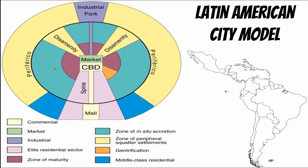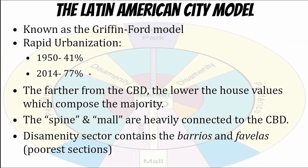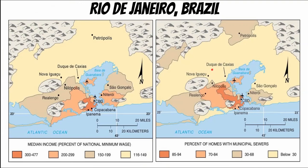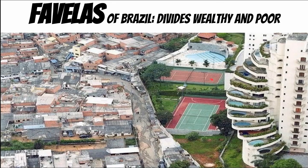Most Latin American cities use the Griffin-Ford model. They have a spine — a promenade where people walk with malls and high rent — followed by disamenity zones. So the highest-class people and the poorest people live very close together. You can see this in Rio, where the favelas in Brazil sit right next to luxurious condos.